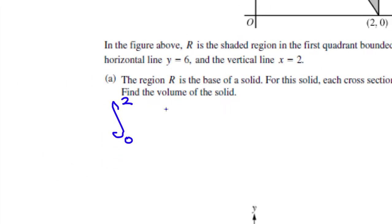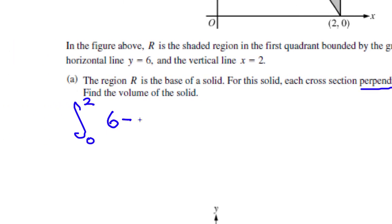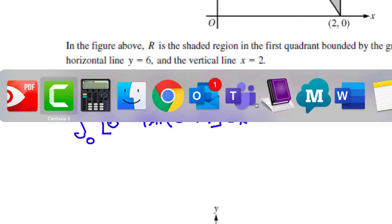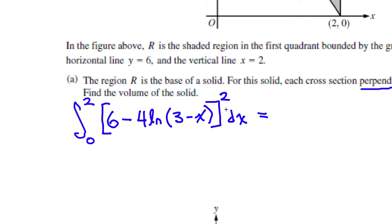I'm going to do top minus bottom. The top is 6 minus the bottom, which is 4 natural log of (3 minus x). All of this, dx. And it's a square, so that's squared — top minus bottom squared. This is going to get confusing when we talk about other lessons like circles when we rotate it around. This one is just top minus bottom squared.